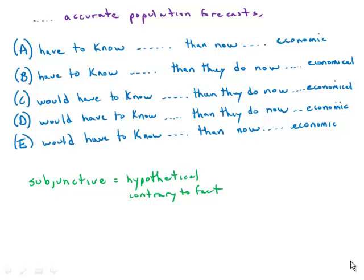It has a split about the verb that begins the underline: have to know versus would have to know. It has a split about what follows the word than, and then it has my absolute favorite split: economic versus economical.